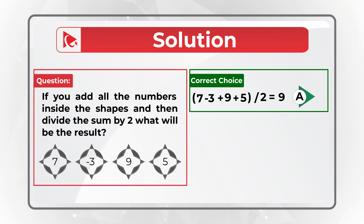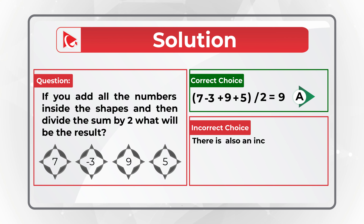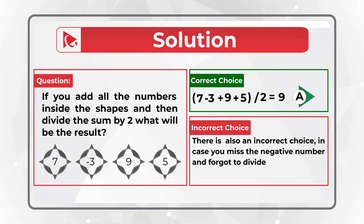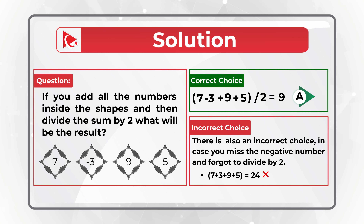What's interesting is that there are many ways to get the incorrect answer. For example, if you forget to divide by 2, there is an answer choice for that. If you don't see the negative number and forget to divide by 2, there is a choice for that too. And if you just forget the negative number, there is a choice for that as well. This tells you that you have to read the instructions carefully. Hopefully you now know how to answer similar problems on the test.